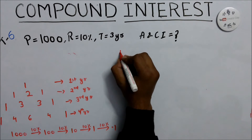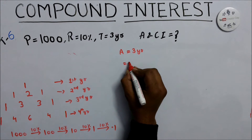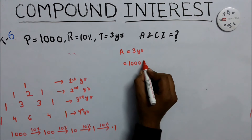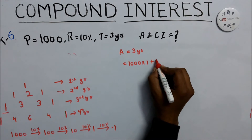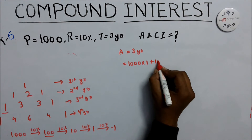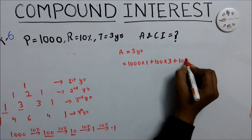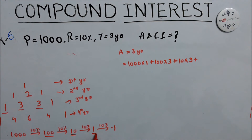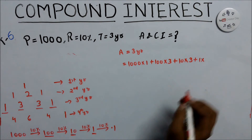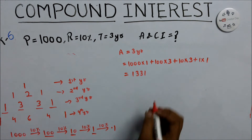Amount for 3 years: take 1000 into 1, plus 100 into 3, plus 10 into 3, plus 1 into 1. This gives 1000 plus 300 plus 30 plus 1, which equals 1331 — the amount for 3 years.